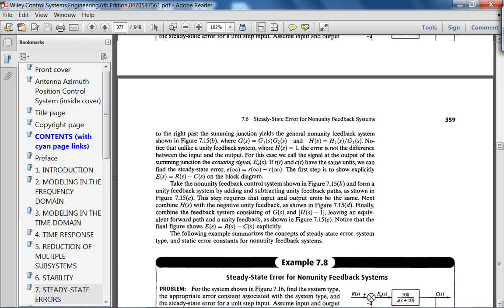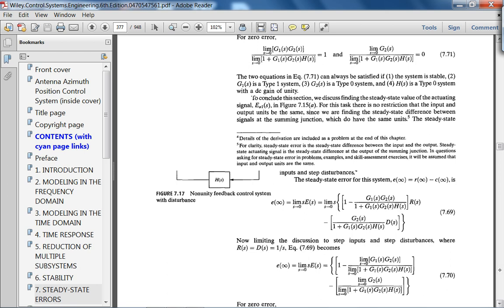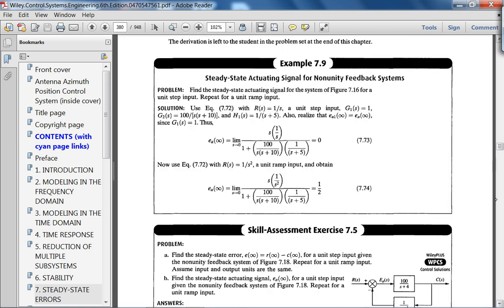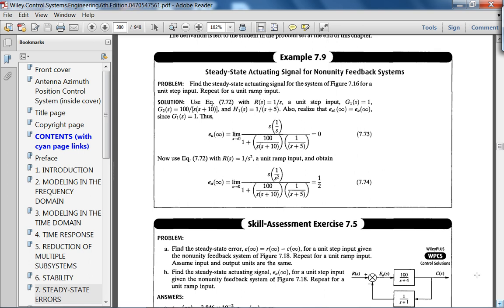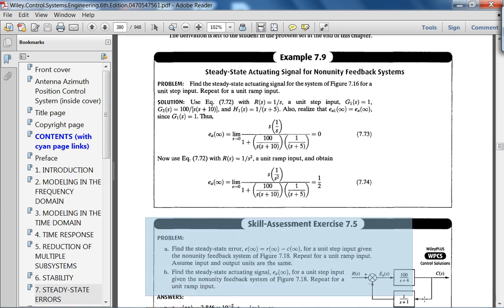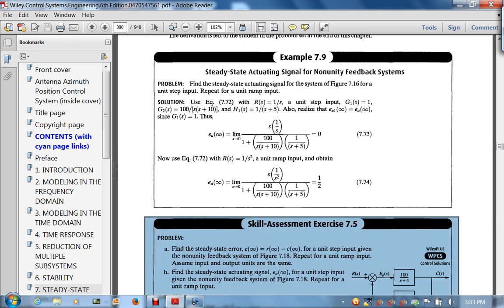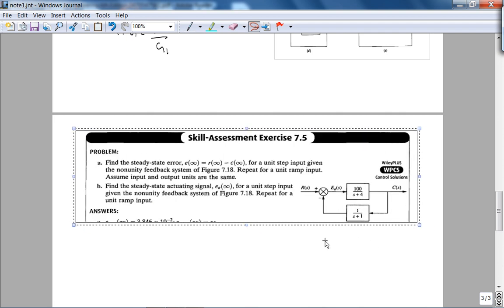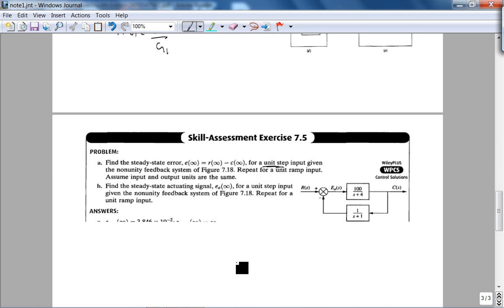So let's just do a quick skill assessment exercise to summarize all the ideas. So here it is. For the steady state, find the steady state error, which we define as the difference between R and C, for a unit step input. Repeat for a unit ramp input. Assume input and output units are the same, which is great. But first, of course, always check stability.